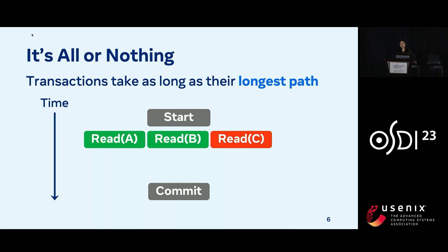Let's say we have a transaction reading A, B, and C. A and B are in the cache, represented in green, while C isn't. The requests for A and B complete relatively quickly. On the other hand, we have to wait for C to be pulled from disk, so this takes much longer. And to the application, it appears as if none of these keys were in cache.